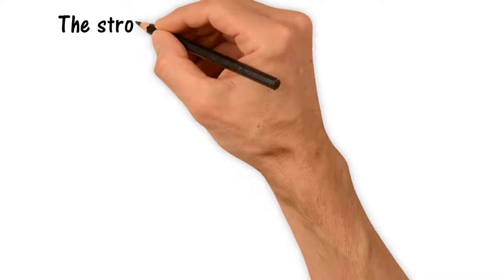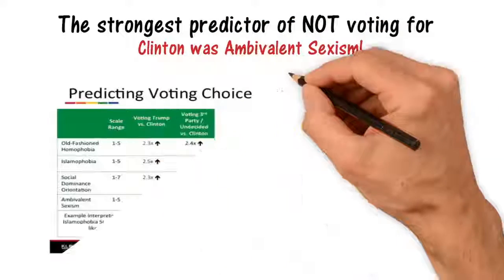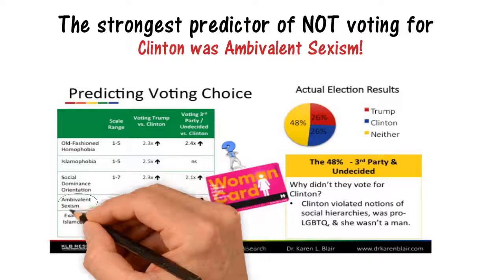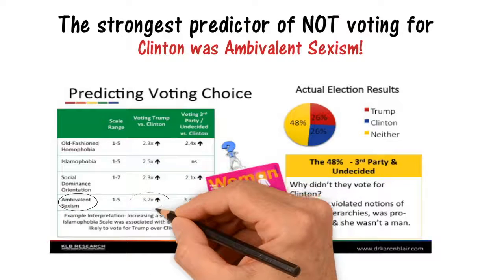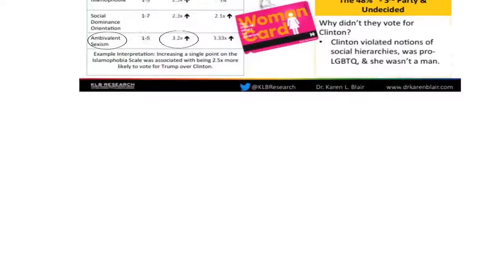The strongest predictor of not voting for Clinton was ambivalent sexism. Individuals who were higher in ambivalent sexism were more than three times more likely to vote for Trump or to be a third-party or undecided voter than they were to vote for Clinton.